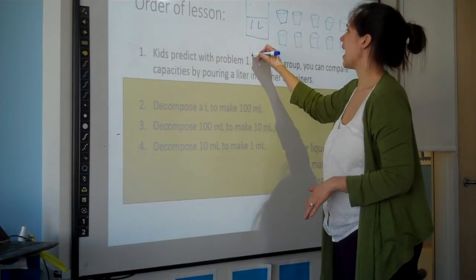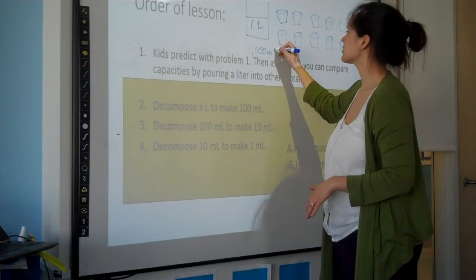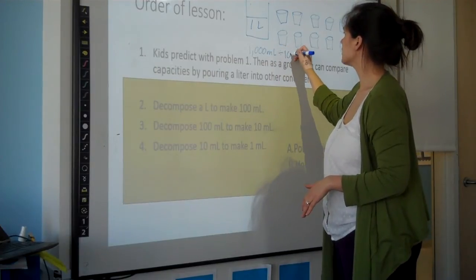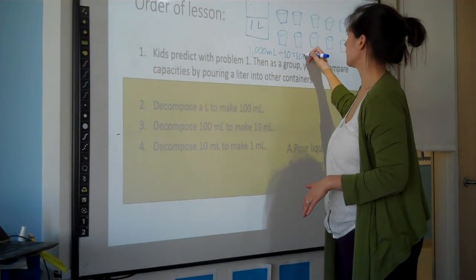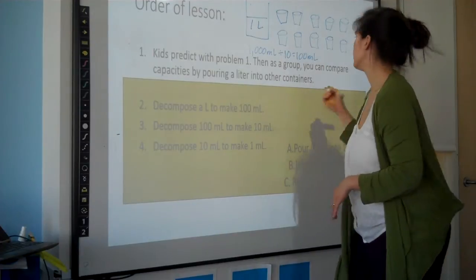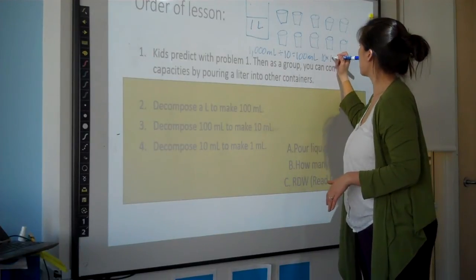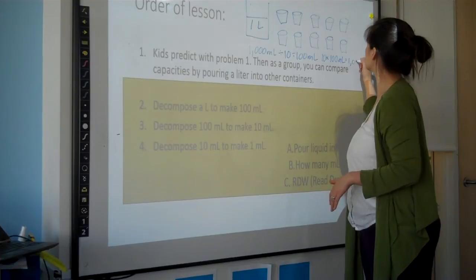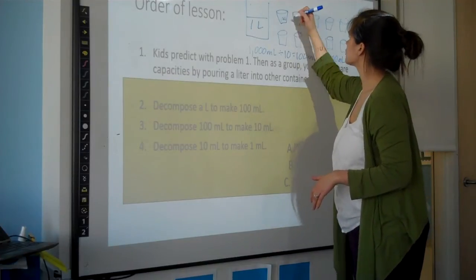So in this case we would do 1,000 milliliters divided by 10 was 100 milliliters. Or 10 times 100 makes 1,000. So each of these was 100.